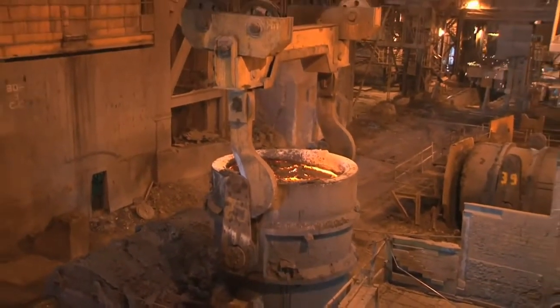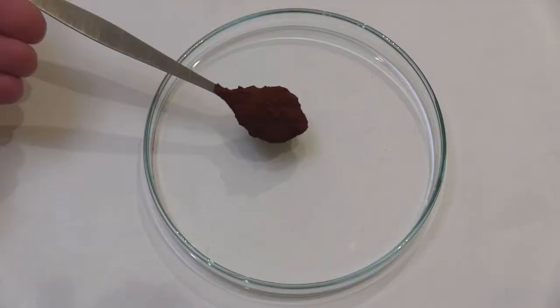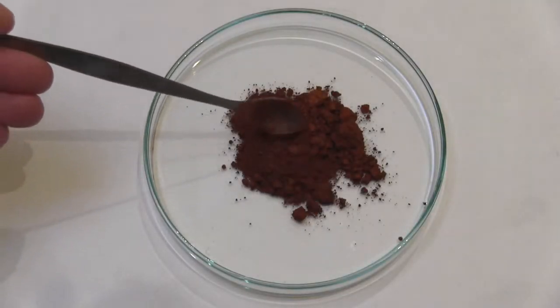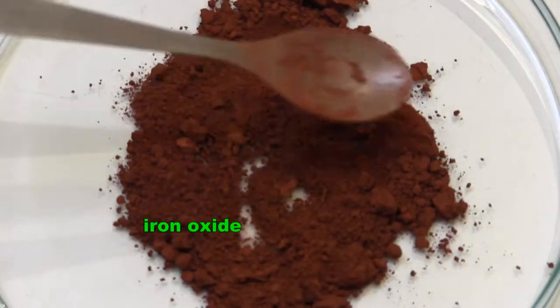The earth's iron atoms are usually chemically joined to oxygen atoms in a reddish mineral called iron oxide. Iron oxide is obtained from iron ore mines.